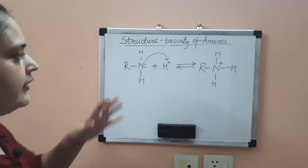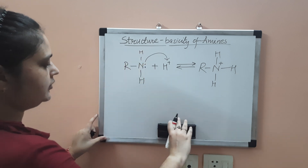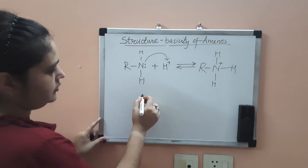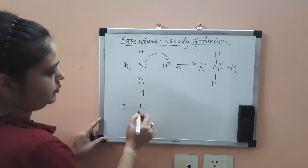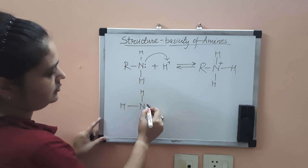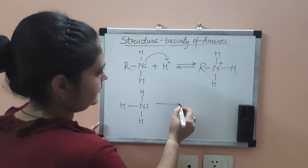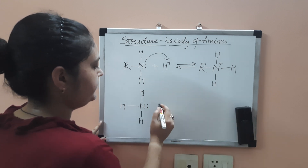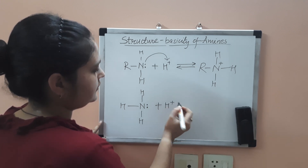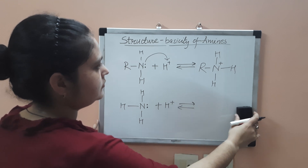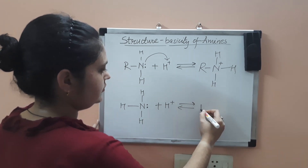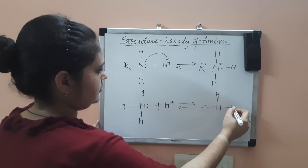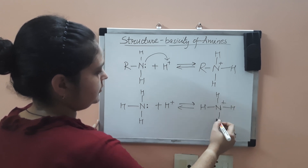Now we'll compare it with ammonia. Ammonia is NH₃ and it will also take up the proton, and a cation will be formed.